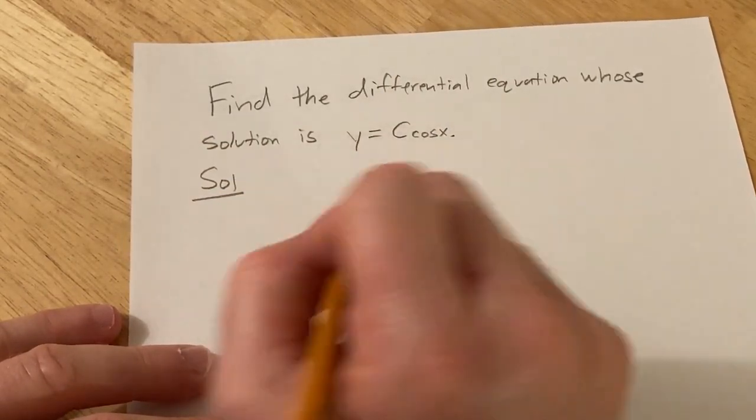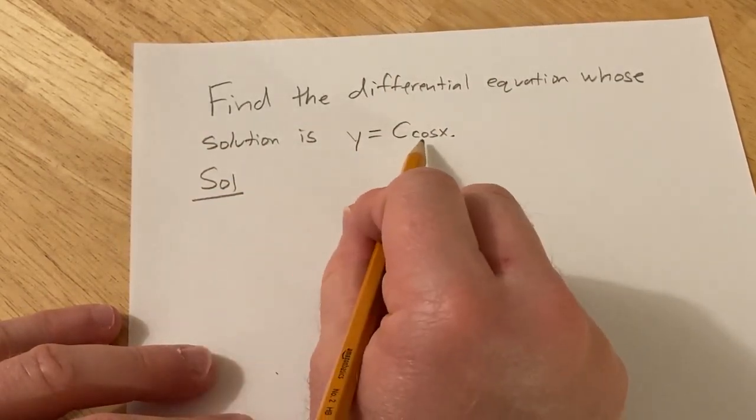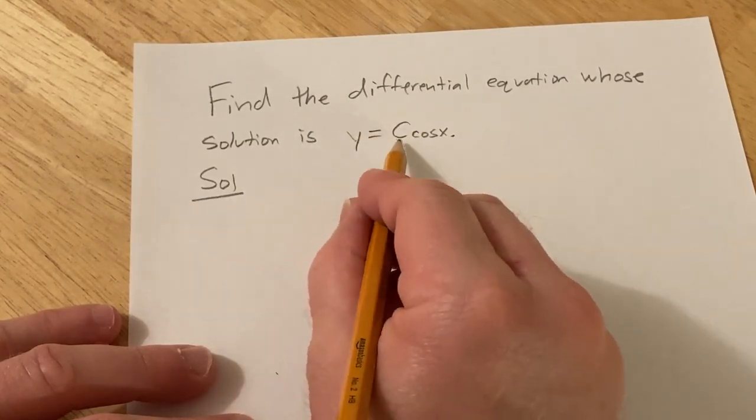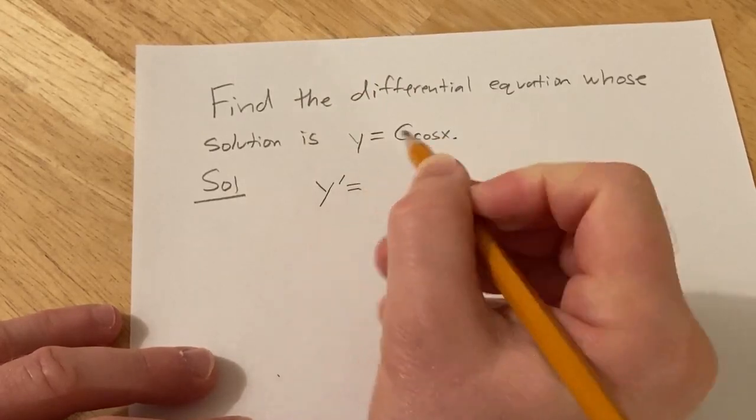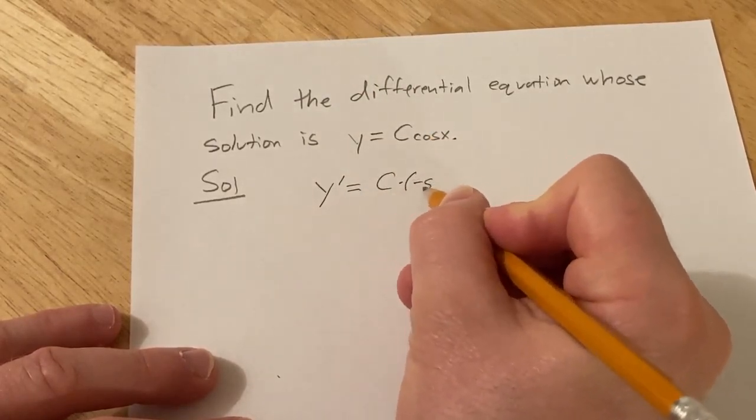So I'm thinking we can start by taking the derivative of this. The derivative of cosine is negative sine and the C is a constant so it hangs out. So y prime is equal to C times negative sine x.